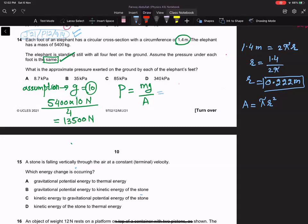So it will become, the force is 13,500 divided by π times the value of r is 0.222 squared.